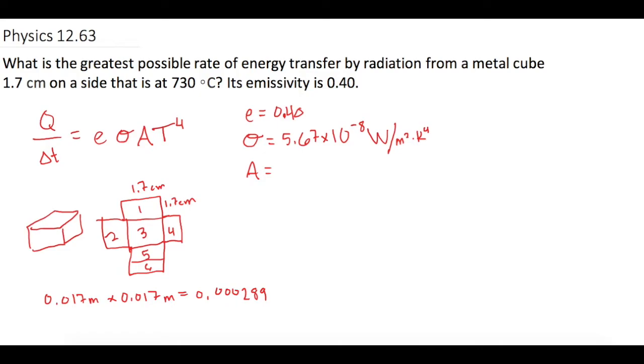And then we multiply that by 6. Because there's 6 sides and that gives us 0.001734.